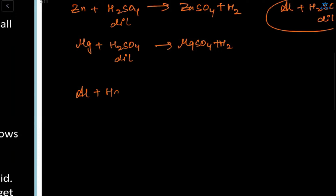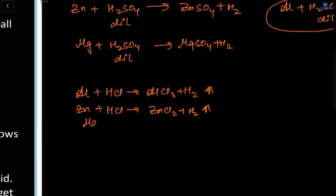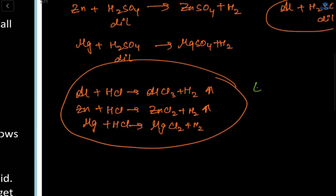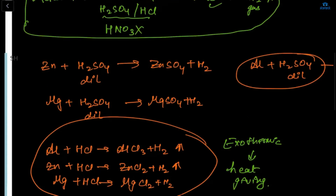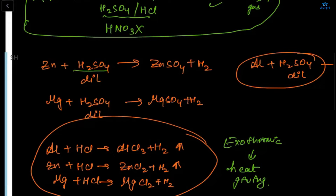Now if we take these metals with HCl: aluminium plus HCl gives AlCl₃ plus H₂; zinc with hydrochloric acid gives ZnCl₂ plus H₂; magnesium with HCl gives MgCl₂ plus H₂. These reactions are all exothermic — meaning heat-giving.